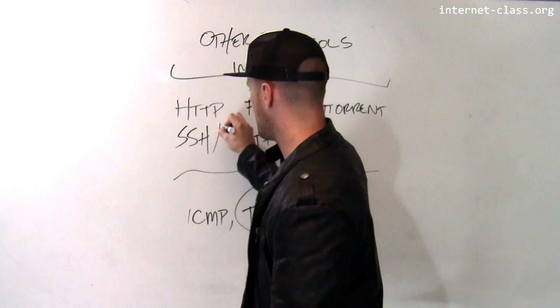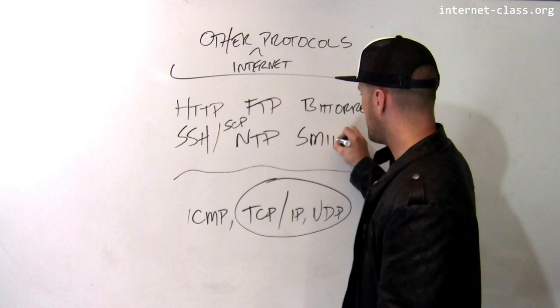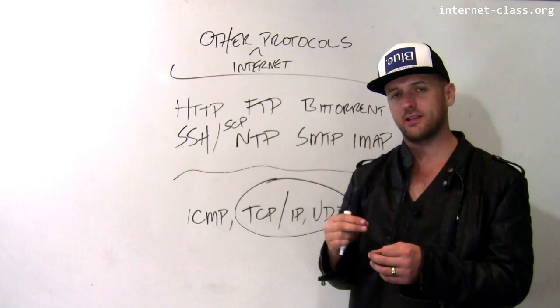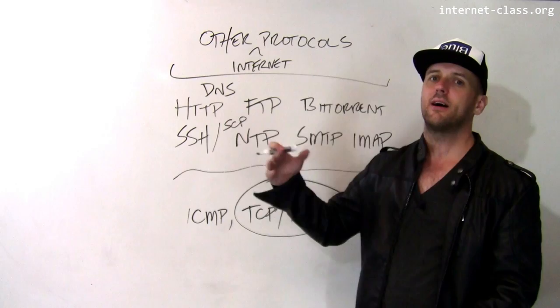SSH also has a companion called SCP — the Secure Copy Protocol — that allows you to copy files between multiple computers. We have the core mail protocols: SMTP, the Simple Mail Transfer Protocol, and IMAP, the Internet Mail Access Protocol. How do we resolve names on the internet? The Domain Name System, which translates things like www.google.com, has its own protocol so that your computer can figure out what address that should map to. And as you can see, this goes on and on and on.